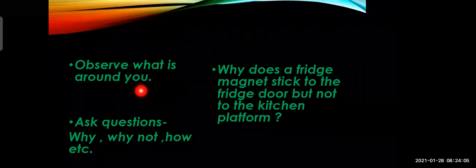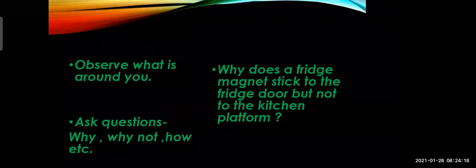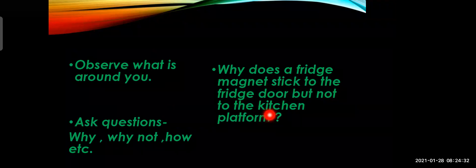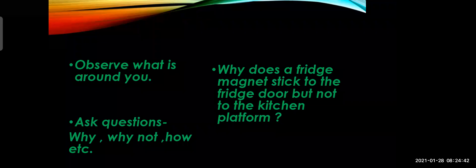The first step is observation — observe what is around you and ask questions like why, why not, how, etc. For example: why does a fridge magnet stick to the fridge door but not to the kitchen platform? You can ask yourself why the fridge magnet sticks only to the fridge door and not to the kitchen platform. Maybe it has some special powers.